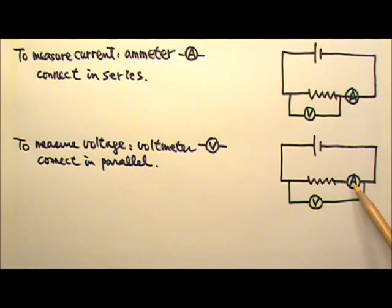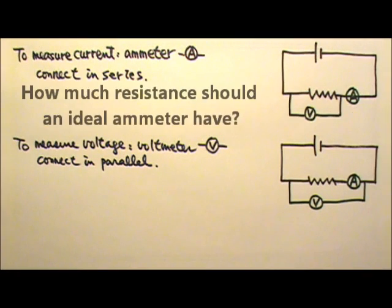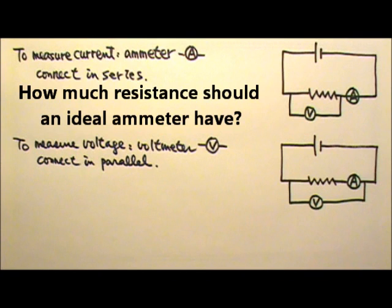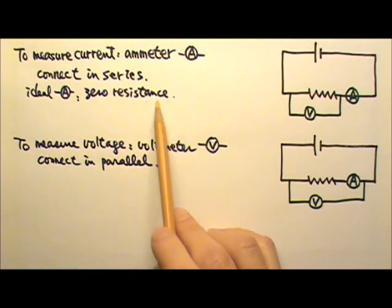So an ideal ammeter should not change anything in the original circuit. How much resistance do you think an ideal ammeter should have? It should have zero resistance.